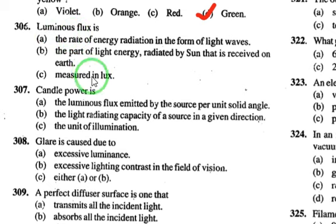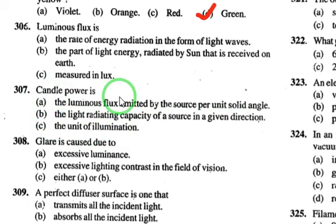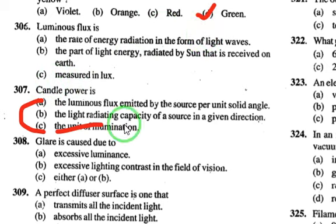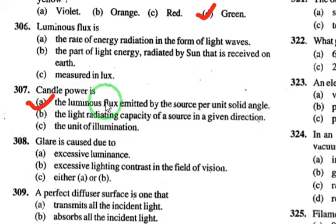Candle power is defined as the luminous flux emitted by a source per unit solid angle. It is also the light radiating capacity of a source in a given direction, and is a unit of illumination. Since all these points are correct, if 'all of the above' is given as an option, that should be selected; otherwise choose the definition: luminous flux per unit solid angle.